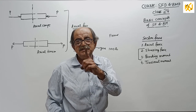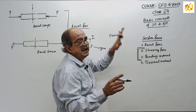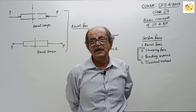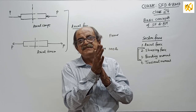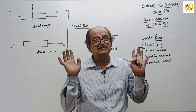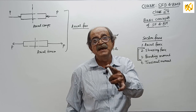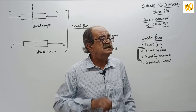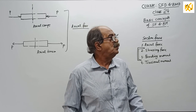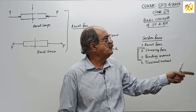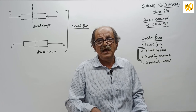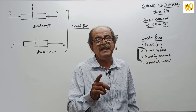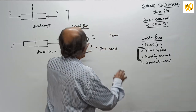Now we will go to SF and BM systematically. Today I will take an example and make it crystal clear. I am not using sign convention today. First, understand what happens — next class will cover the very powerful sign convention. I will first write a beam here. I want to find the reactions. Those who find reactions unclear should go through the previous classes.